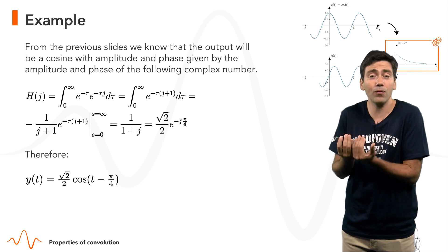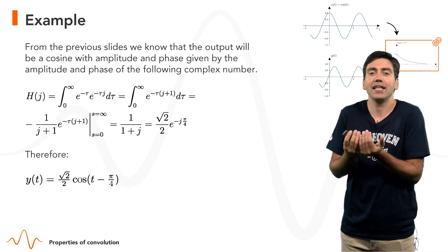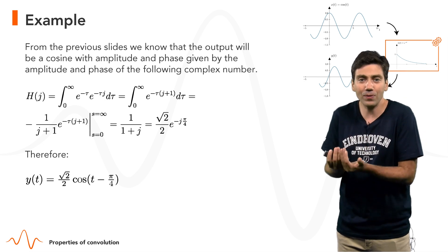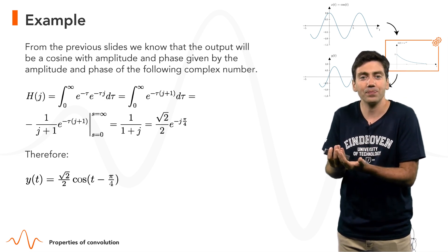It's nothing more than the angular frequency of the input and since the input is cosine of t, its angular frequency is one, ω is one.